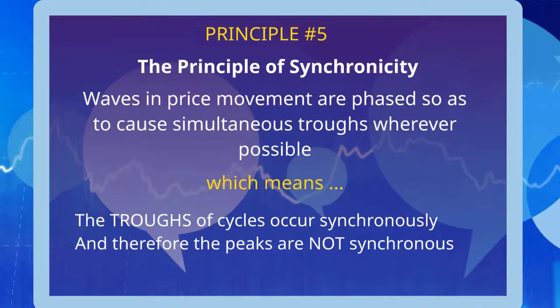Now let's move on to the principle of synchronicity. This principle tells us that waves in price movement are phased so as to cause simultaneous troughs wherever possible. Phasing means very simply where we are in the progress of each cycle moving from a trough to the peak. So it is where that cycle is positioned relative to time.